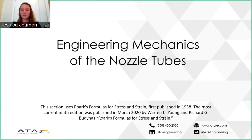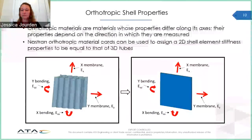This section on the engineering mechanics of the nozzle tubes shows the need for different bending and membrane shell stiffnesses as well as different directional stiffnesses. It uses equations taken from Roark's Formulas for Stress and Strain. Even though the materials used in rocket nozzles are typically isotropic, the X and Y bending and membrane properties are different for a tube. Orthotropic material cards can be used to assign these different stiffnesses to a shell element so that the thin rectangular shape behaves in the same way as a section of the tubes.